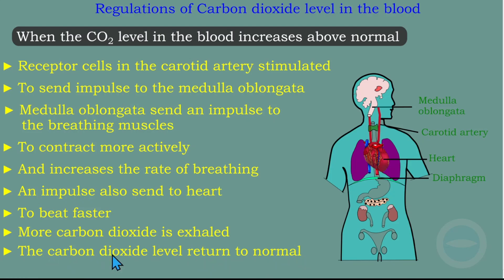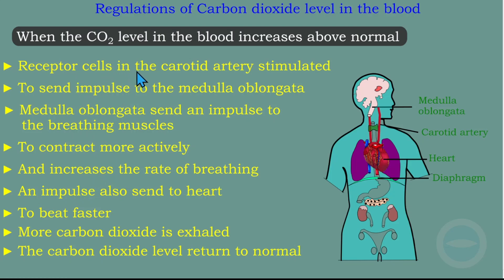This is how our body controls the level of carbon dioxide. This information comes from a previous question paper memorandum, so make sure you write exactly like this to get all the marks — it's about seven to eight marks. When writing about negative feedback, you must mention everything: the stimulus — for example, someone exercising — the receptor, the control center, the effector, and make sure you state that the level returns to normal so that you get all the marks.